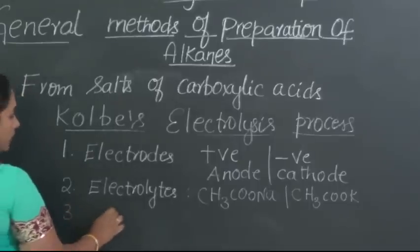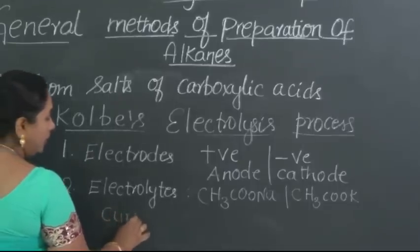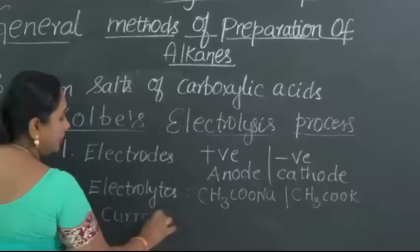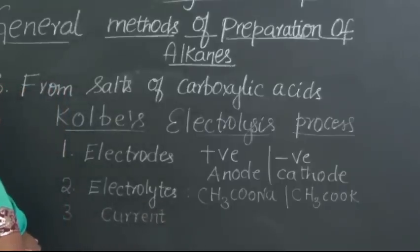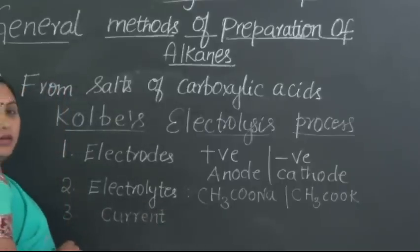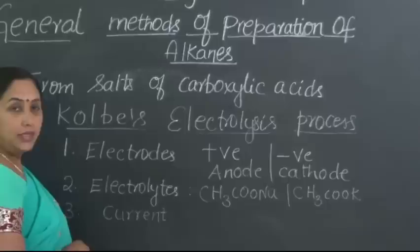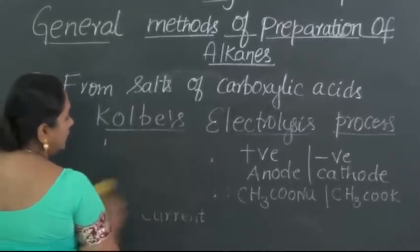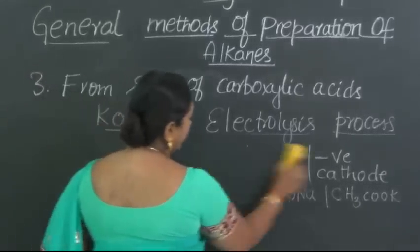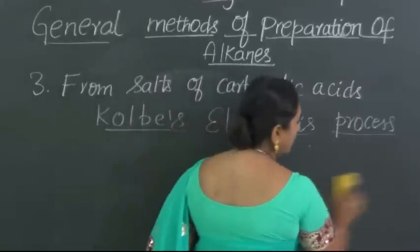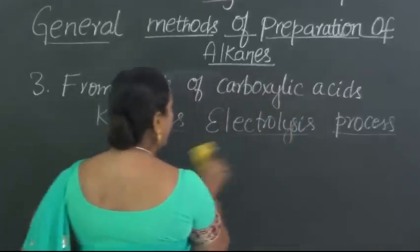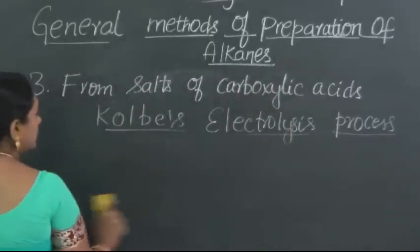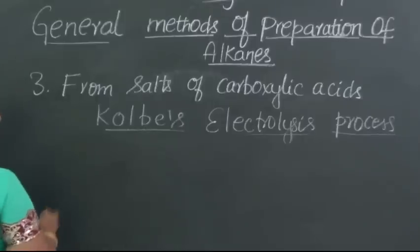Next, we need to pass current from external source through the electrodes so that the electrolysis process can set in. Now, let us carry on with the actual reaction. These are the requirements for carrying out the electrolysis process. Let us see how this process occurs.